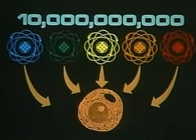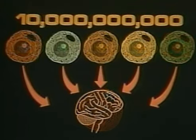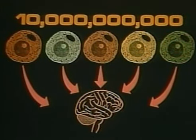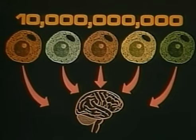Similarly, if we look at the next leap in evolution — the evolution of intelligent consciousness — we find it again takes several billion nerve cells linked together in the human brain to produce the reflective consciousness characteristic of humanity. Though again, the figure is not meant to be exact.